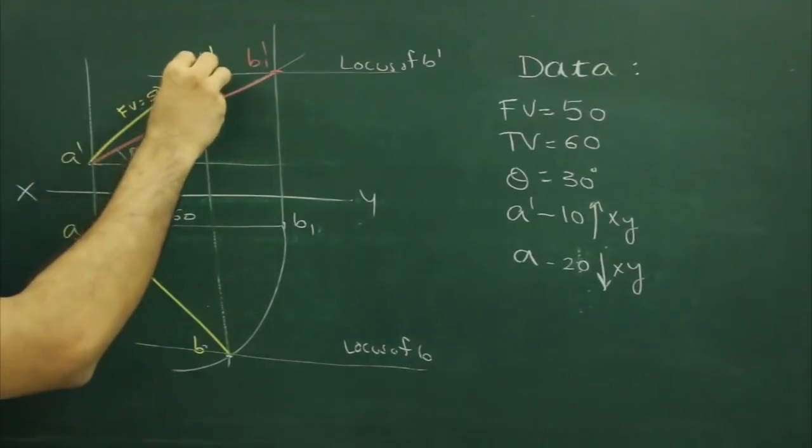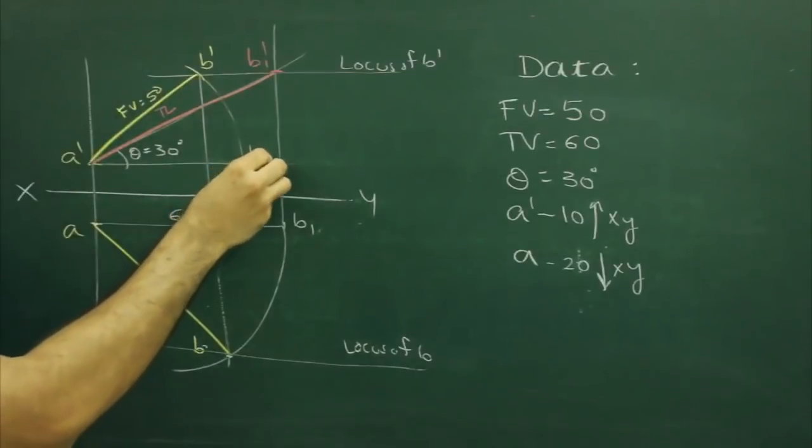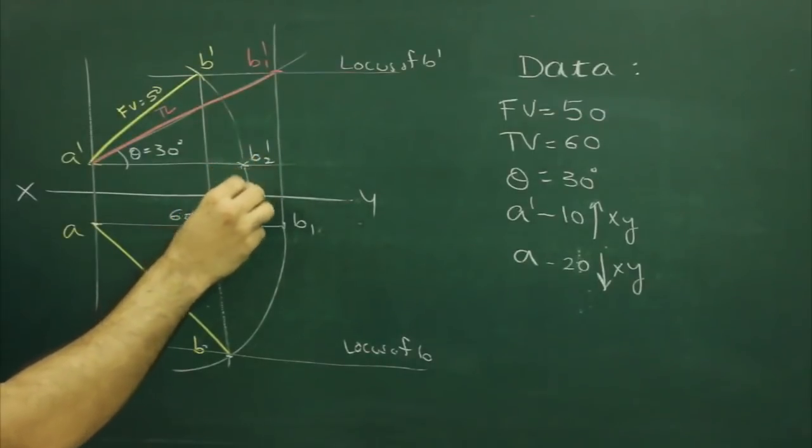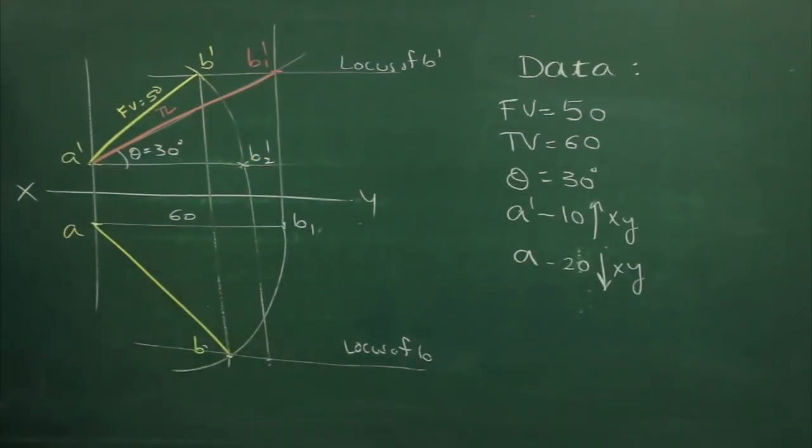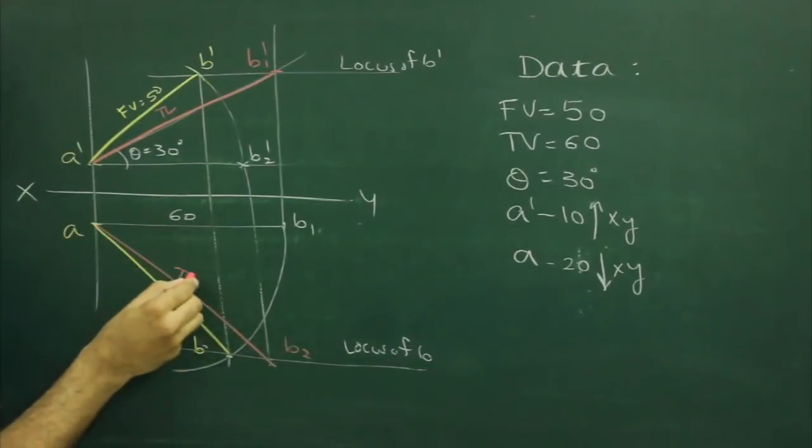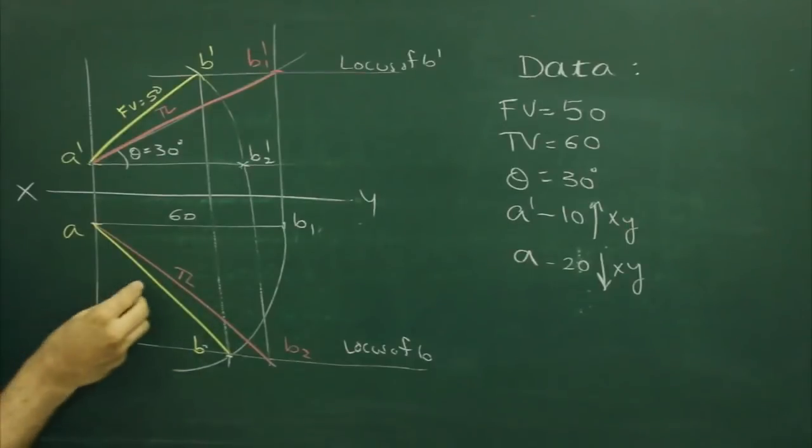Rotate A' or B' till here. Mark that point as B2', project this point straight down. Wherever it will cut, that is B2', and this will be true. This is top view.